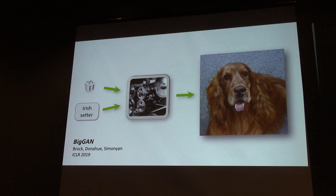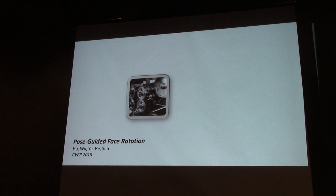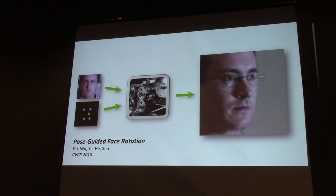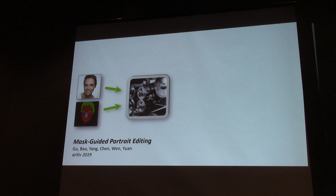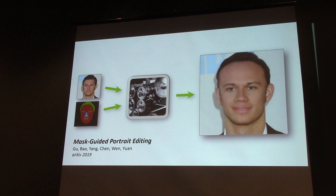We can also interpolate between classes to create hybrids for interesting results. We can condition on spatial landmark locations to control the 3D pose of the image, or we can condition on a mask image that explicitly specifies the position and shape of parts of the image, and then edit the mask at runtime so the output reflects those edits. But the problem with these conditioning-based approaches is that they all require a lot of high-quality labeled training data, which is quite difficult and expensive to obtain.